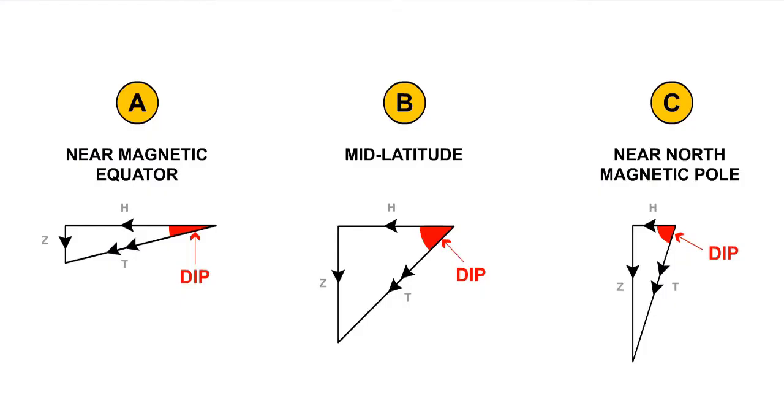As can be seen in the diagram, the angle of dip will vary with increasing magnetic latitude. Example A has a low dip angle, as it is near to the magnetic equator. Example B has more dip at mid-latitudes, although the angle is acceptable. Example C has a large angle of dip, as it is near to the magnetic pole.